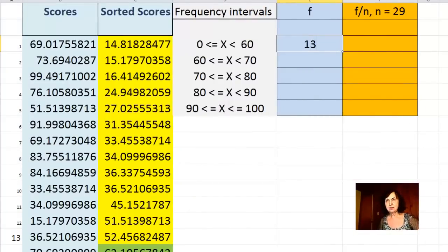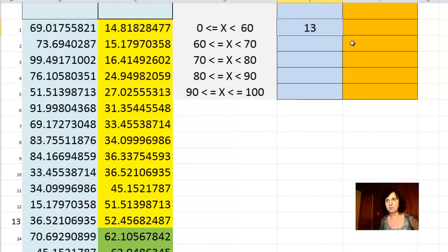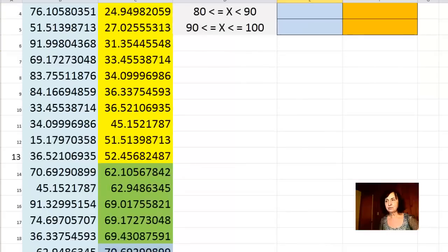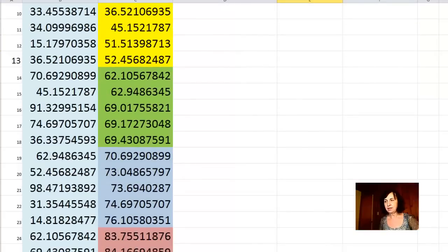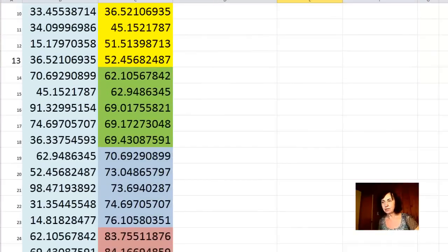Let's see the second interval between 60 and 70. I have 5 students in this interval. I specifically selected easy-to-calculate data. In the third interval, between 70 and 80, I have again 5.